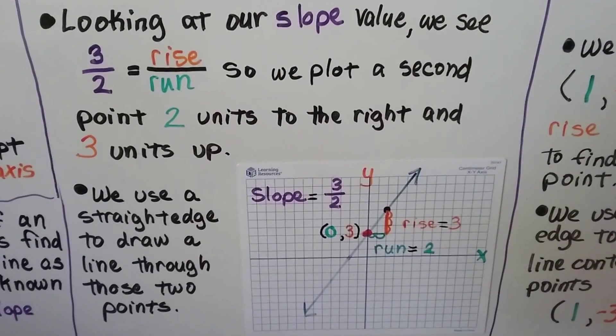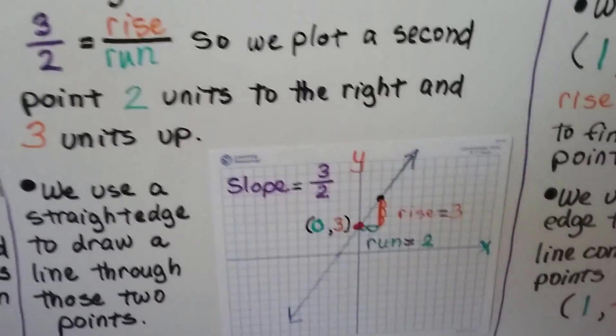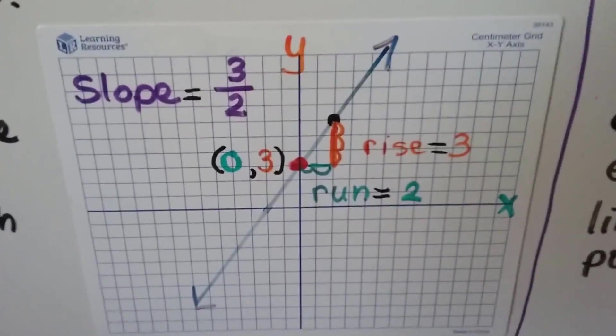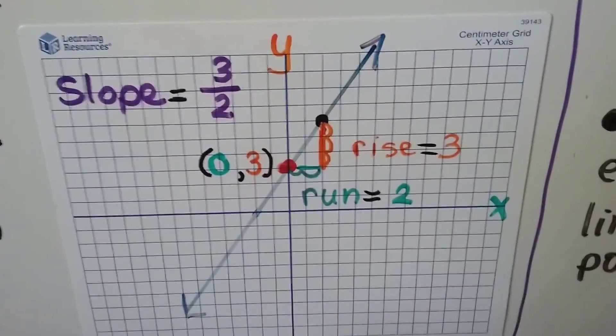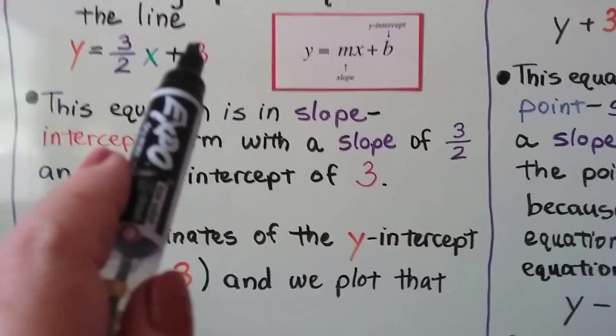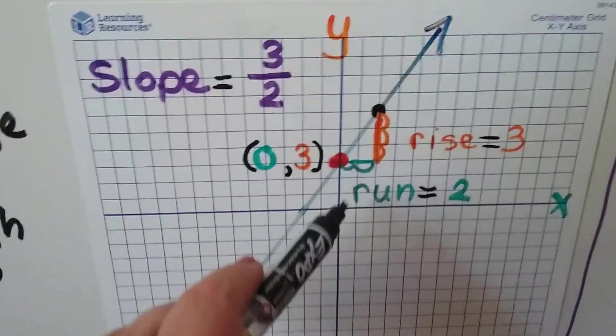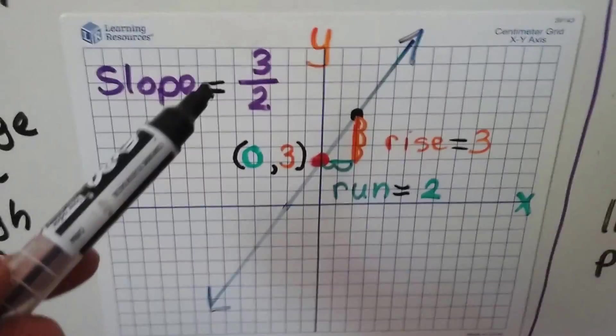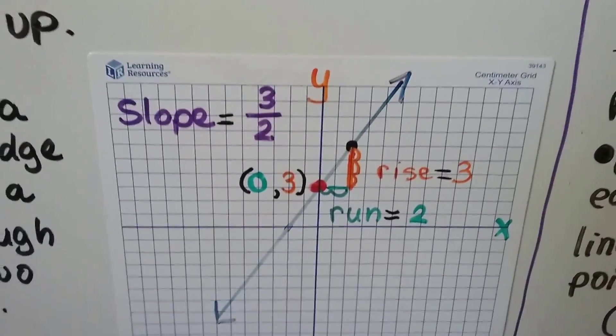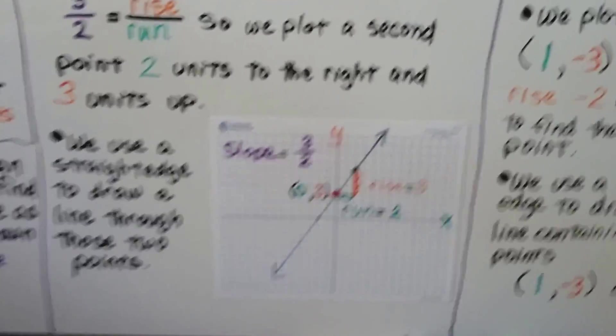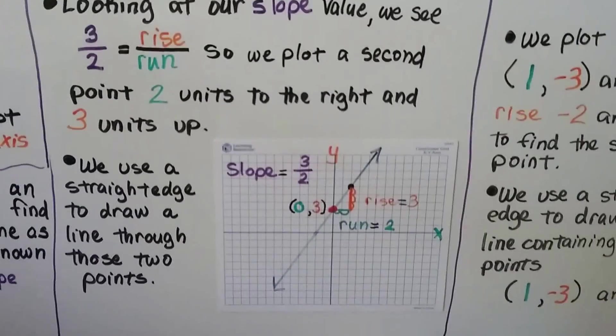Looking at our slope value, we see 3/2, that's the rise over the run. So we plot a second point 2 units to the right and 3 units up. We know that our rise is 3/2, that's a 3 over a 2. The y-intercept is a 3, where the line is crossing the y-axis. We can go over 2 for our run and up 3 for our rise and put a point there. Then we use a straightedge to draw a line through these two points. We have now graphed the equation of the line y = (3/2)x + 3.